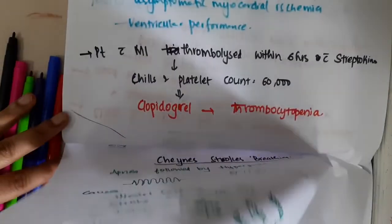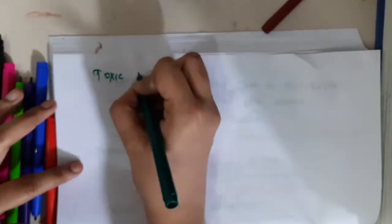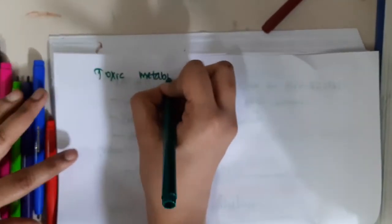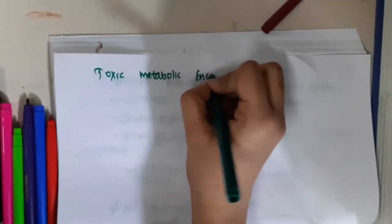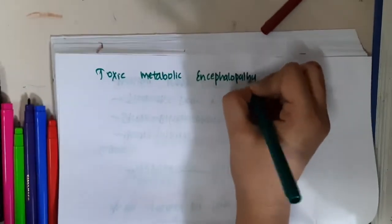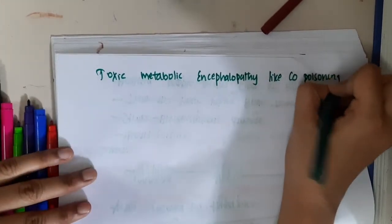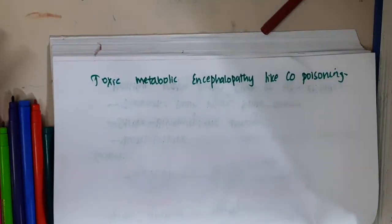This Cheyne-Stokes breathing also occurs in toxic metabolic encephalopathy. It occurs in toxic metabolic encephalopathy like carbon monoxide poisoning. So these are important points about Cheyne-Stokes breathing. Thank you for watching.